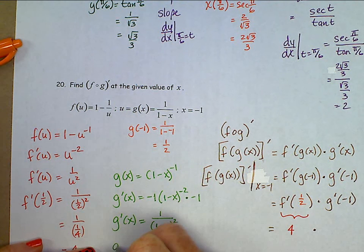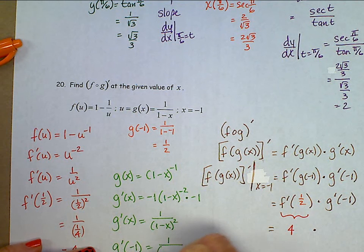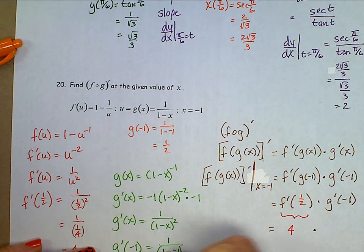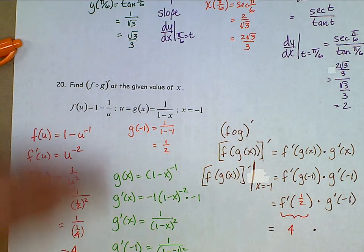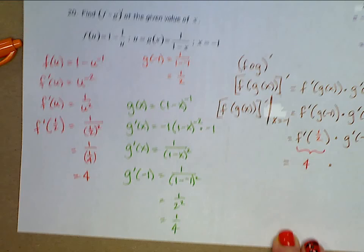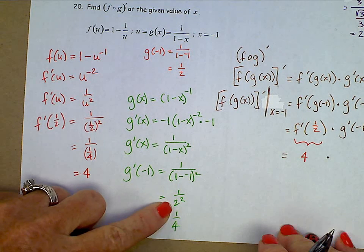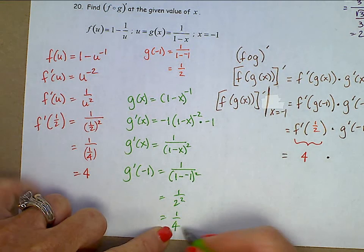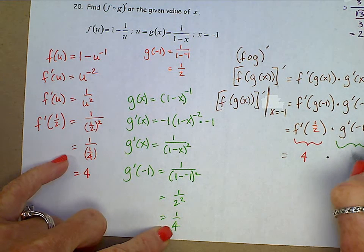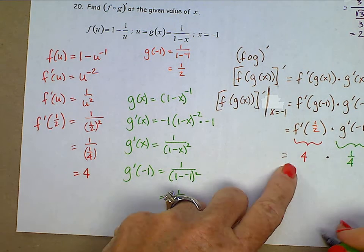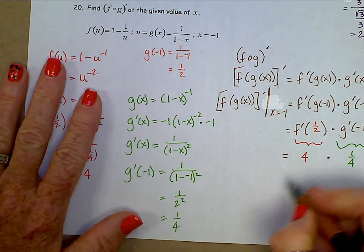And g prime of negative 1 is 1 over 1 minus a negative 1 squared. 1 over 2 squared, which is 1 fourth. We're going to take that 1 fourth right up here. And 4 times 1 fourth is 1.